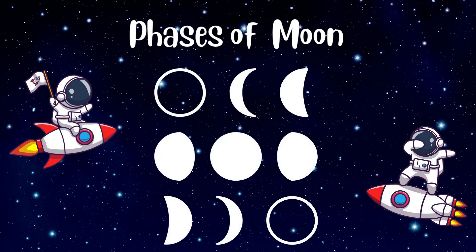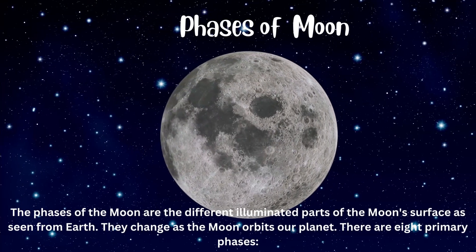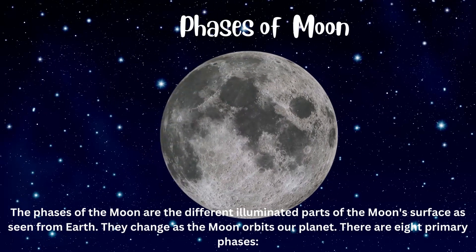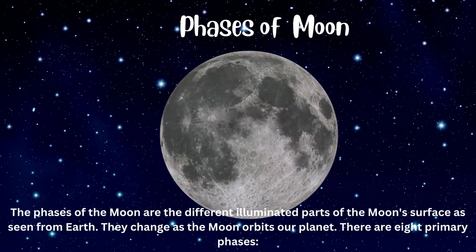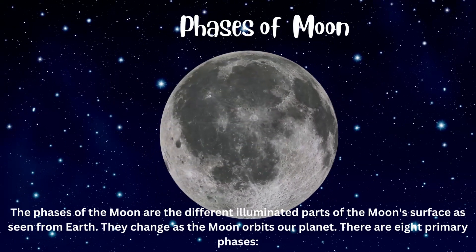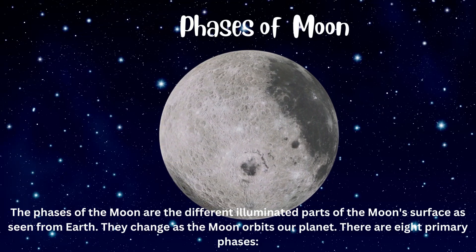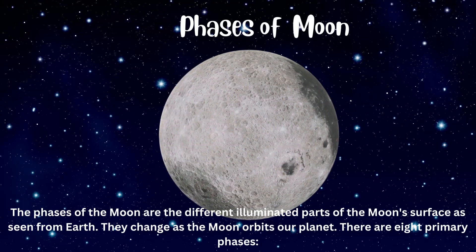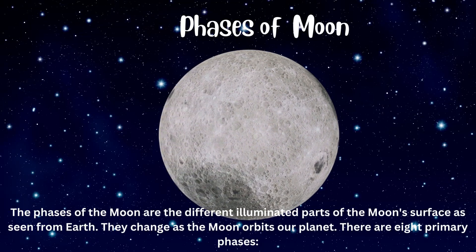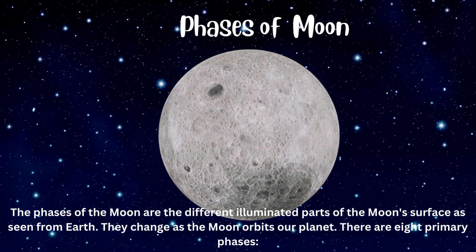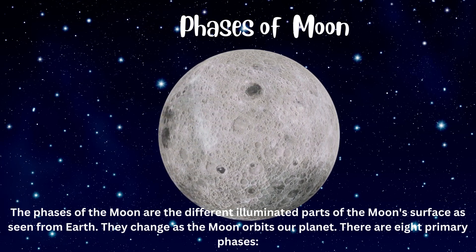Hi friends, welcome to our channel. Let's explore phases of moon. The phases of moon are the different illuminated parts of the moon's surface as seen from earth. It changes as the moon orbits our planet. There are 8 primary phases.